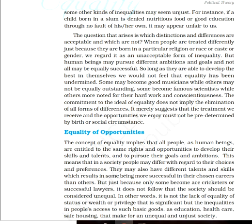Suppose there are two students: Student A from a rich and influential family, and Student B from a slum area. The government has provided them the right to education. Student A will pay for the education, while Student B will not pay any fees. Under the right to education, both students will get a basic education. When people are treated differently just because they are born in a particular religion, race, caste, or gender, we regard it as an unacceptable form of inequality.